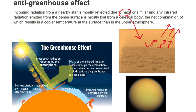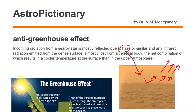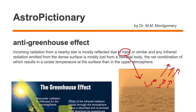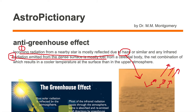So we have two mechanisms working together in the anti-greenhouse effect: radiation emitted from a dense surface is mostly lost, and incoming radiation from a nearby star is mostly reflected. These two combined cause the surface to be cooler than the atmosphere, and hence we have an anti-greenhouse effect.